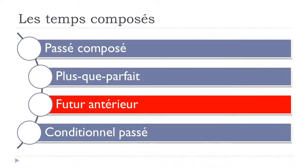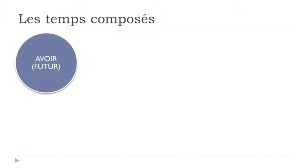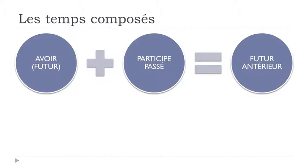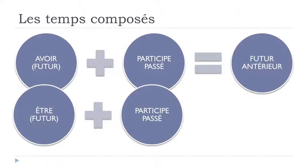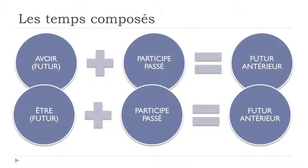The next tense we saw was le futur antérieur. Remember: exactly the same construction, but avoir should be conjugated at the futur form, then le participe passé, and you get the futur antérieur. For the same exceptions — as with passé composé, plus-que-parfait — you use être at the future tense plus le participe passé to get le futur antérieur. Let's see the future form for avoir and être.